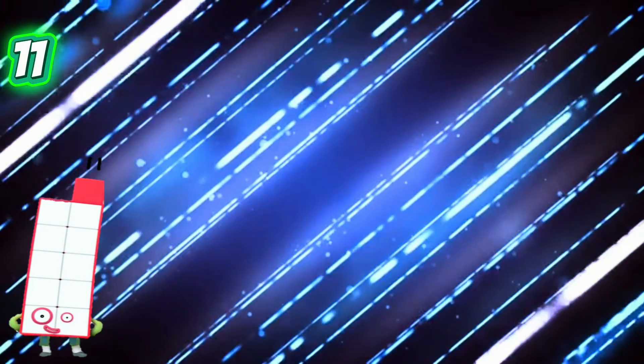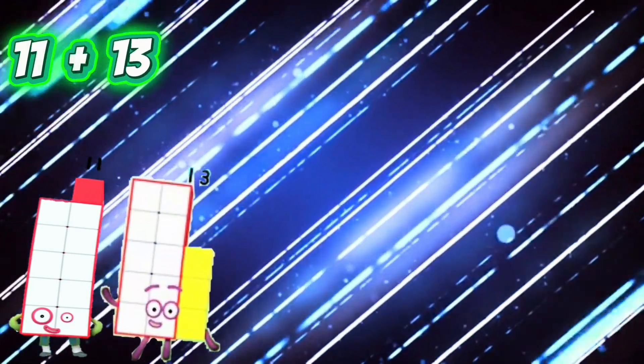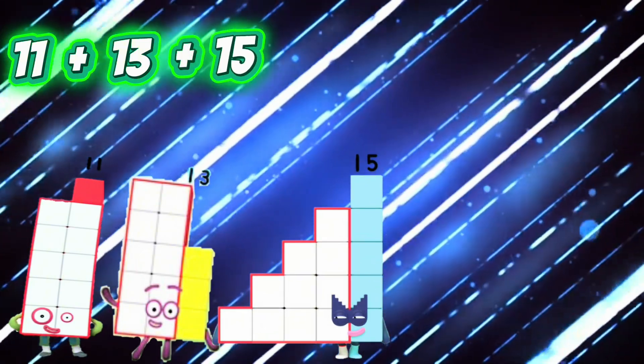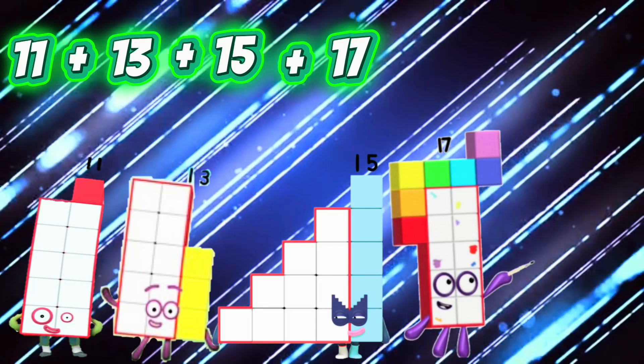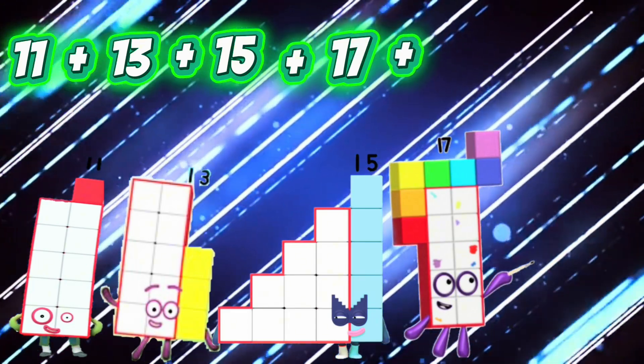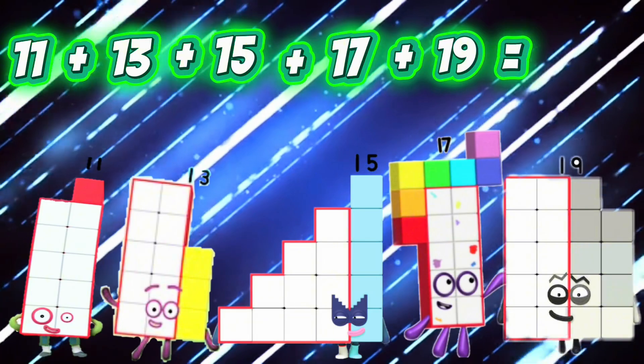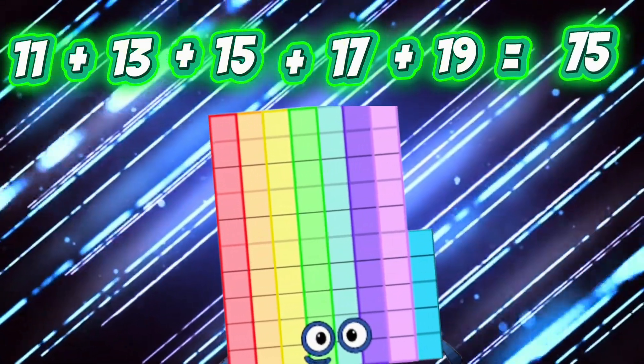25. 11 plus 13 plus 15 plus 17 plus 19 is equals to 75. Next,